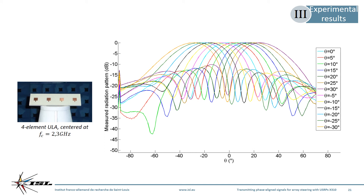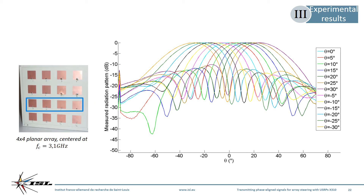The first result plots the radiation patterns measured with the transmitting ULA at 2.3 GHz. Each colored plot corresponds to a given direction theta set by the user for the array main lobe. Measurements show that for values of theta between minus 30 and plus 30 degrees, the main lobe is effectively centered around the user-set value of theta, confirming correct lobe steering. The second measurement uses a row of the planar array as a ULA centered at 3.1 GHz, and again the lobe is correctly steered. These results demonstrate that both arrays can be steered at different carrier frequencies with the same hardware.